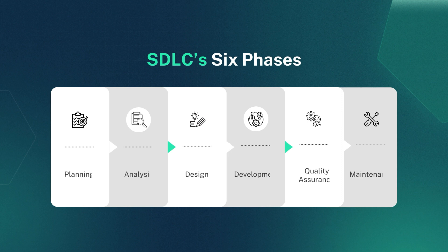What is the enterprise software development process? The process of developing software for enterprise-level business involves six phases. It is often referred to as the software development lifecycle, or SDLC. The SDLC's six phases are planning, analysis, design, development, quality assurance, and maintenance.